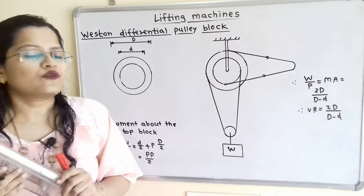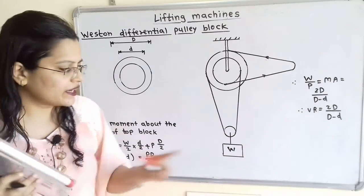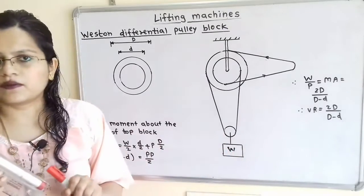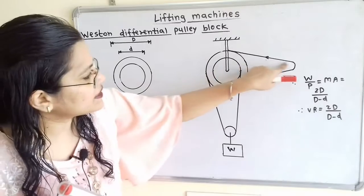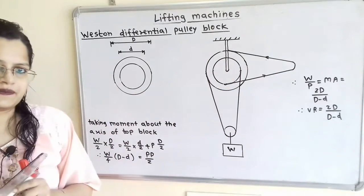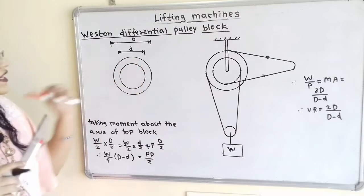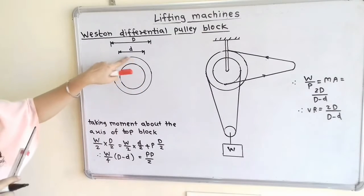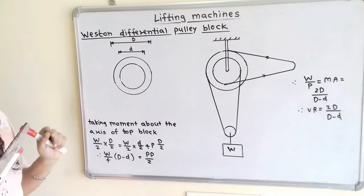Now we will find out the velocity ratio. The load W is connected at the bottom pulley and at the top, here is the chain where we have to apply the effort. We will understand this with the help of the diagram. This is the larger wheel and here is the smaller wheel.